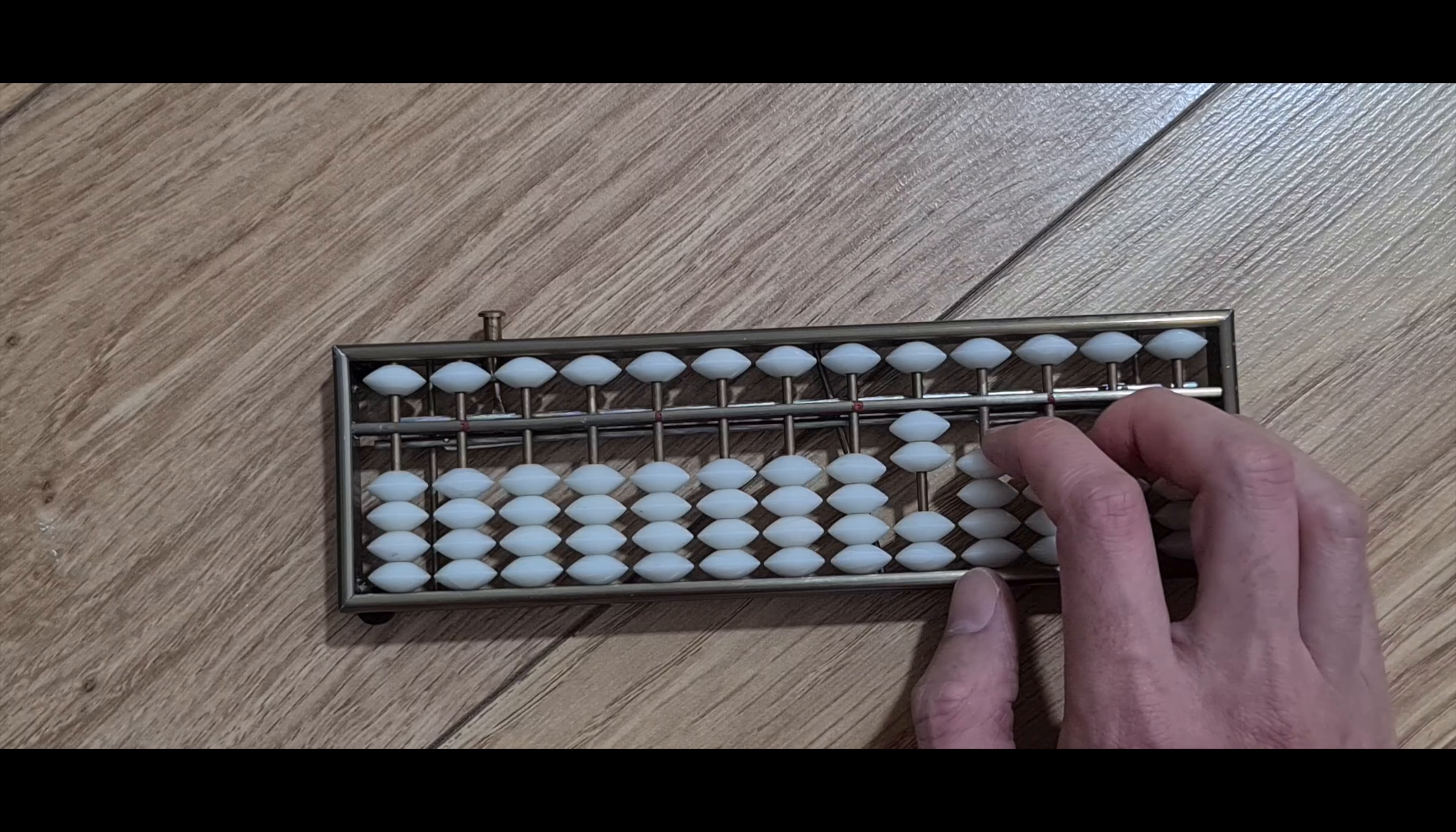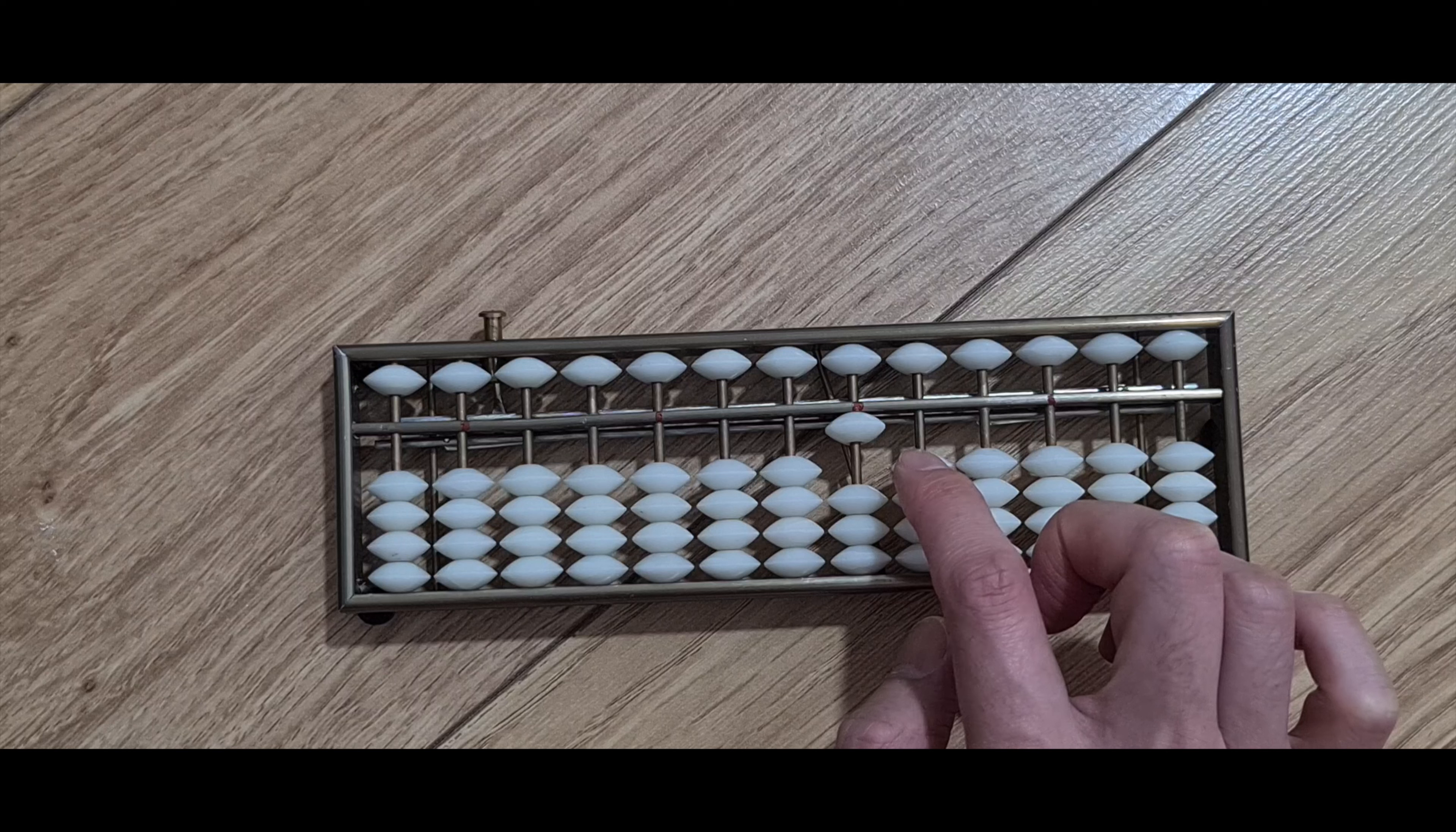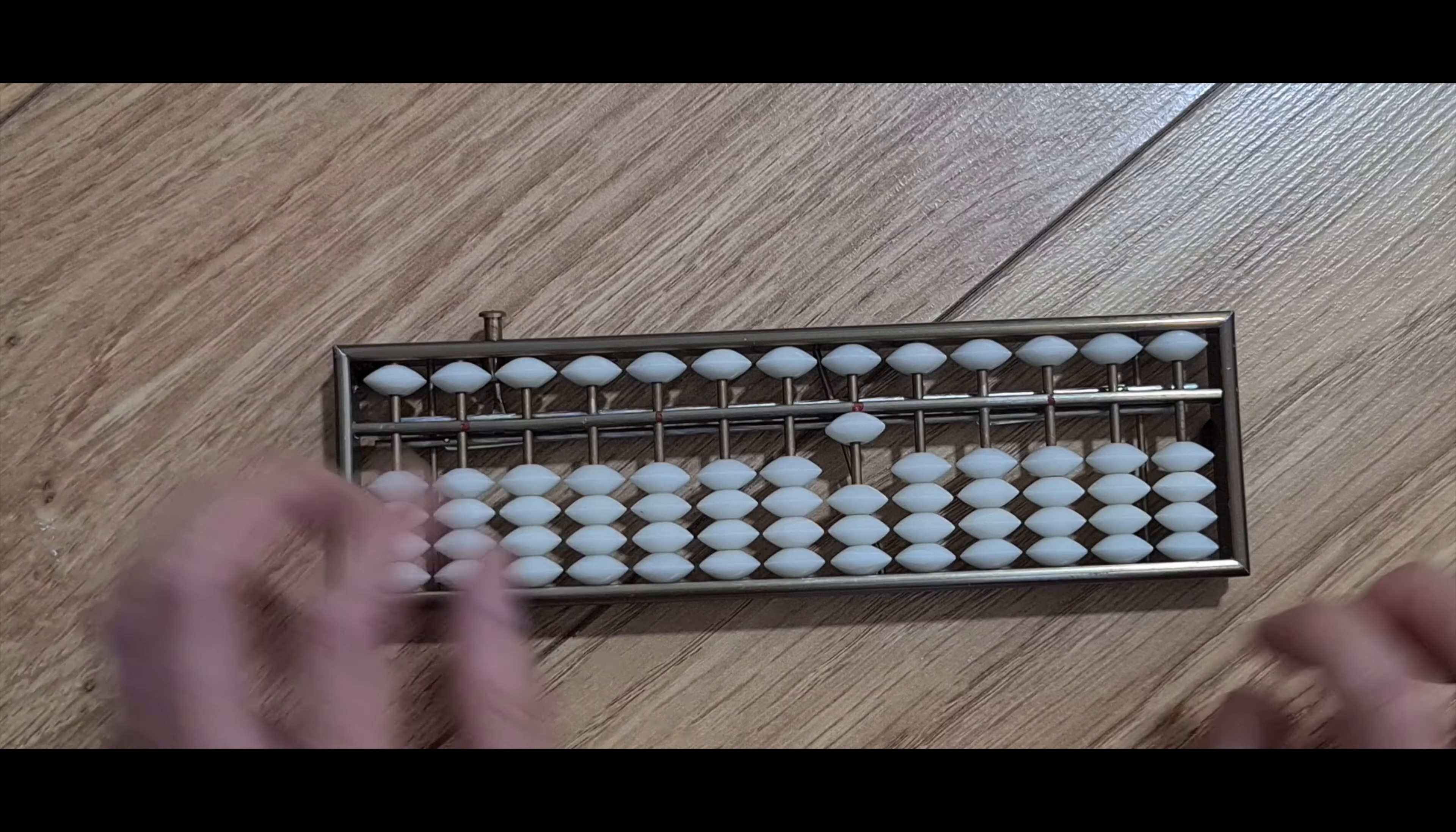So they'll count in multiples of ten thousand once it goes up and up. So this would be twenty ten thousand, which is two hundred thousand to us. But yeah, that's just the way they do their numbering system.